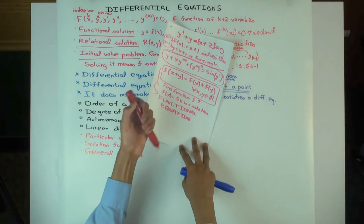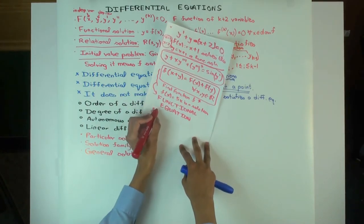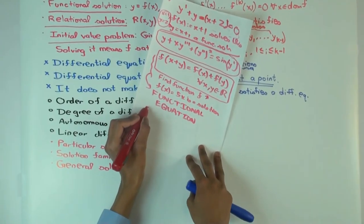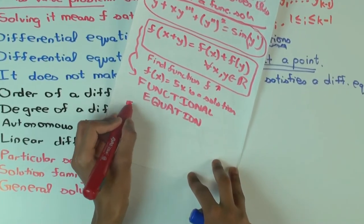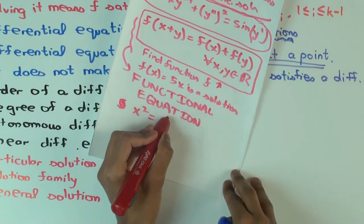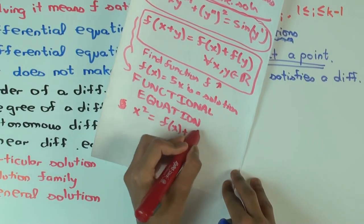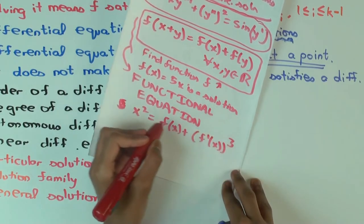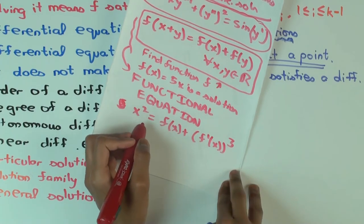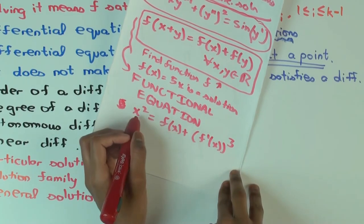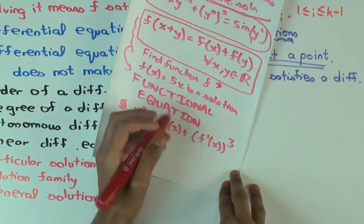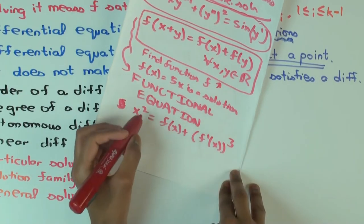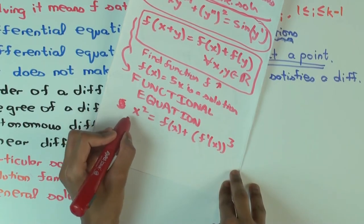For example, f(x) plus f'(x) cubed equals something — this is a differential equation, because you have a relation between x, f(x) and f'(x). Now suppose I give you x squared equals f(x) plus f'(1 - x). Is this a differential equation? No, not the way I've defined it. Why? Because you are evaluating the function at two different points — x and 1 - x. It's really relating the behavior of the function at two far-away points.